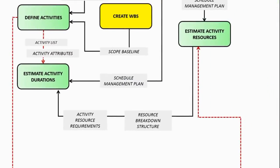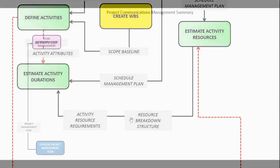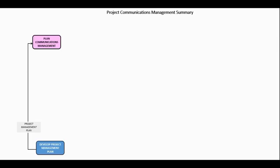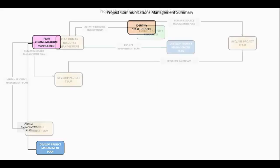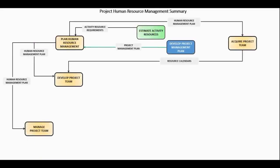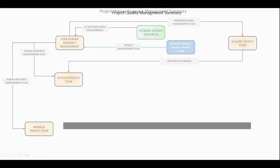Two very important outputs: one is called the Resource Breakdown Structure from Estimate Activity Resources, and the other is Activity Resource Requirements. The Resource Breakdown Structure is an input to Plan Communications Management. Whatever exists in the project management plan will become an input to Plan Communications Management. It's also important that the project manager understands the five team development stages and plans how to develop the team so they can synergize effectively.